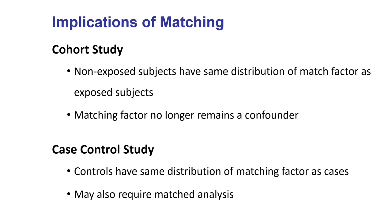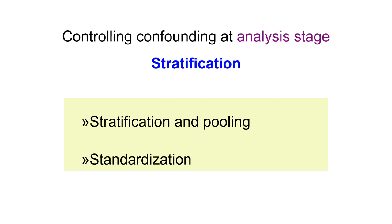Regarding implications of matching: in a cohort study, non-exposed subjects have the same distribution of matched factors as exposed subjects, and the matching factor no longer remains a potential confounder. In a case-control study we need to be careful — even if we match on potential confounders while selecting cases and controls, we still may need to do a matched analysis at the analysis stage to account for those confounders.